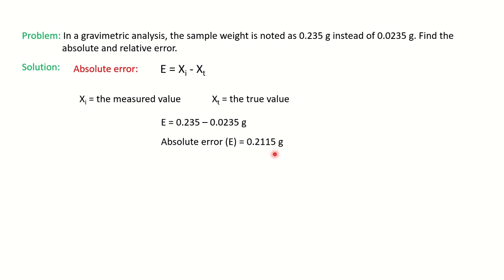Now, the formula for relative error is the absolute error divided by the true value. Absolute error we have just now calculated, so that is xi minus xt divided by the true value times 100%. Normally relative error is calculated as percentage, so we will multiply with 100 and you will get the answer 900%.